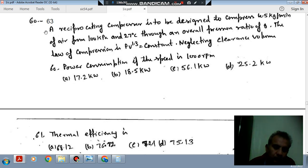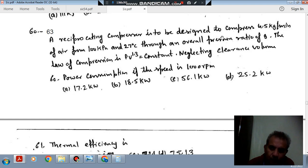Hello, welcome again. We are solving questions from thermal engineering. The topic is gas turbine, IC engine, and air compressor. Questions number 60 to 63 have a common statement: a reciprocating compressor is to be designed to compress 4.5 kilograms per minute of air from 100 kPa and 27 degrees Celsius through an overall pressure ratio of 9.